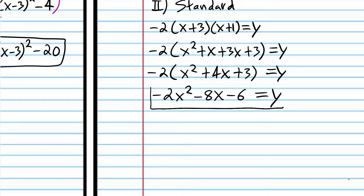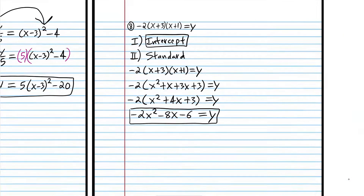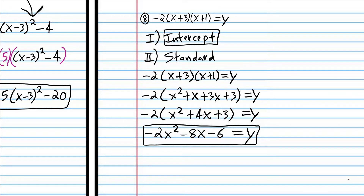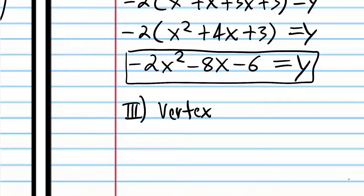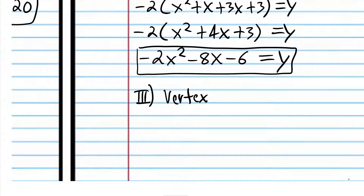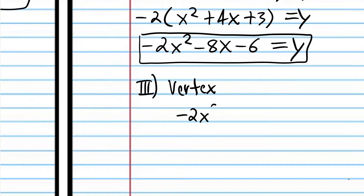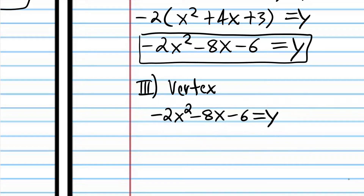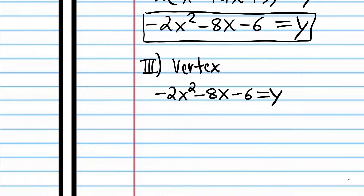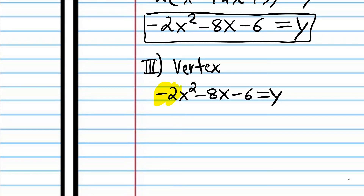We converted from intercept form to standard form. Now we're going to go to vertex form — and this is the step that takes quite a bit more thought. To convert to vertex form, we're going to start where we left off in standard form. Remember: to convert to vertex form, you have to complete the square. But we can't complete the square unless we get rid of the coefficient on the x squared term first.